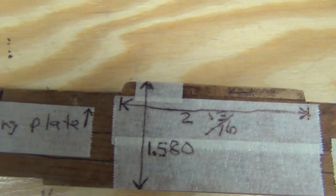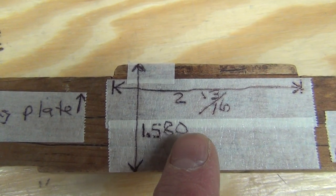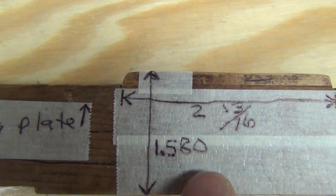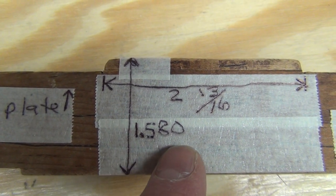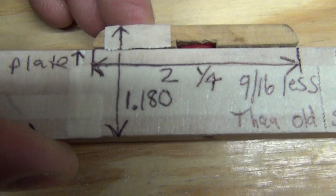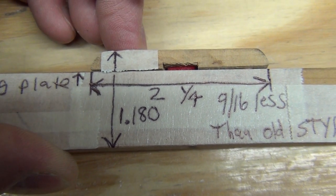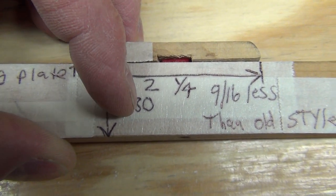And the overall height of the old-style key in the center where the strength is needed on the old key was 1.580, that's over one and a half inches. On the new key, it's 1.180. It's four hundred thousandths of an inch less in height.